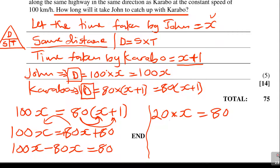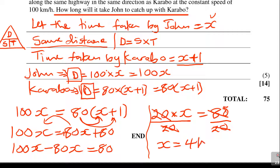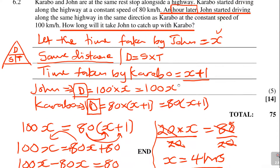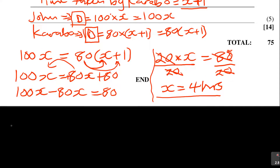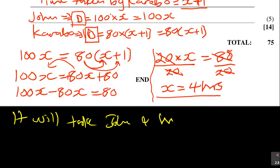To solve for x, divide both sides by 20 — the opposite of multiplication is division. 20 goes into 80 four times, so x equals 4. That means it will take John 4 hours to catch up with Garabo.